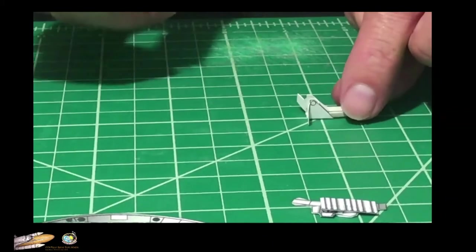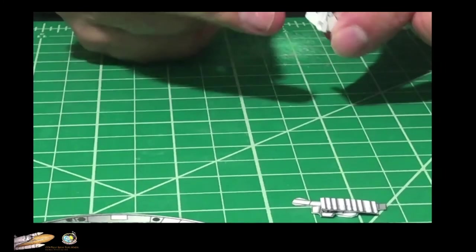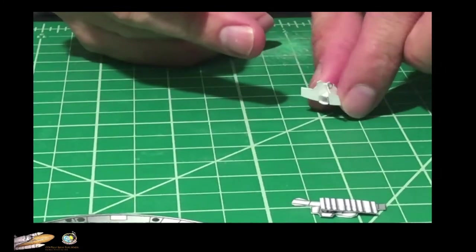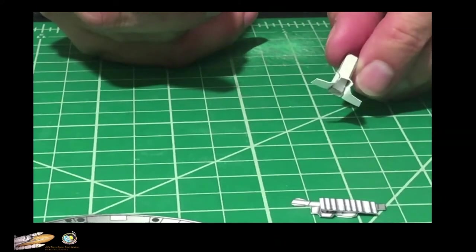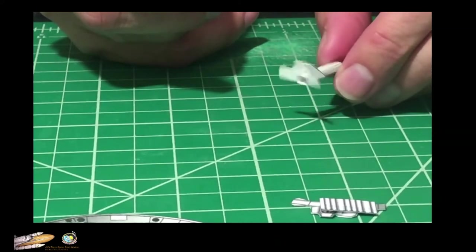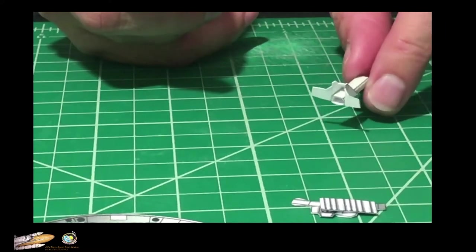You can use regular Elmer's glue. Don't use crazy glue here or instant glue. It's not needed. The crazy glue you can use for other parts, the legs. So we are going to leave this pillar to dry.